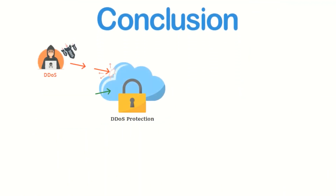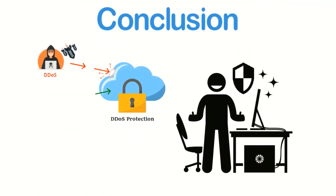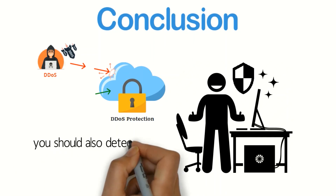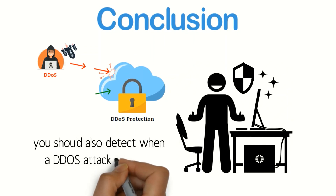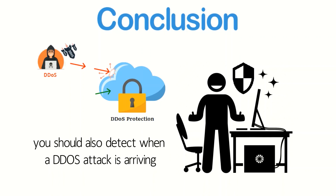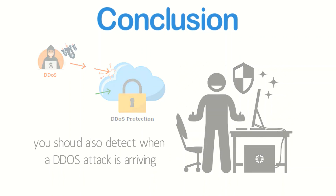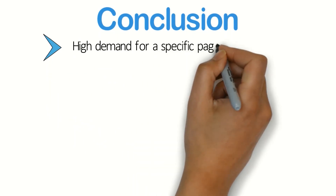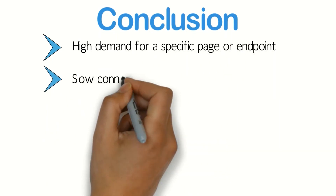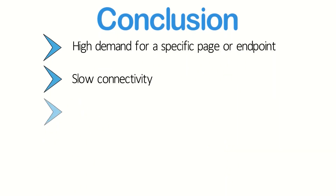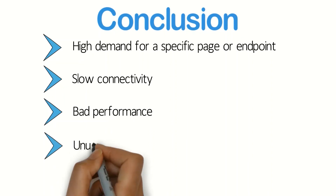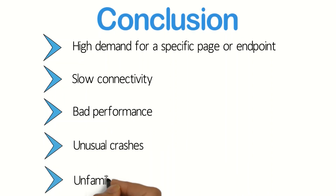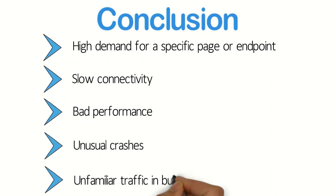Conclusion: Now you are ready to tackle DDoS attacks with minimal risk of loss. But you should also detect when a DDoS attack is arriving. Here are some signs of a DDoS attack: high demand for a specific page or endpoint, slow connectivity, bad performance, unusual crashes, unfamiliar traffic in bulk, and slow disruptions.